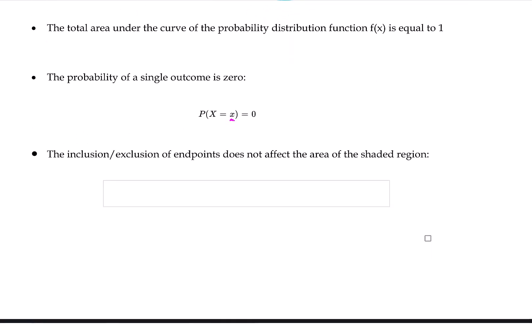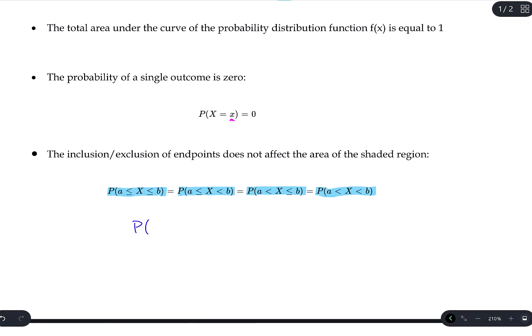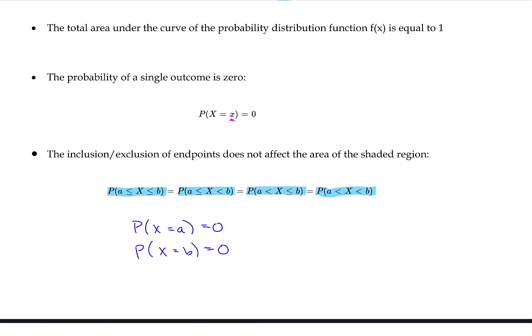Because the probability of a single outcome is 0, the inclusion and exclusion of endpoints does not affect the area of the shaded region. It doesn't matter if a question asks for the probability between two values including the endpoints, excluding one, or excluding both — since the probability of each endpoint itself is zero, the total area under the curve is the same. So unlike with binomial distributions, you don't need to worry about 'at most' versus 'less than' distinctions in a continuous distribution.